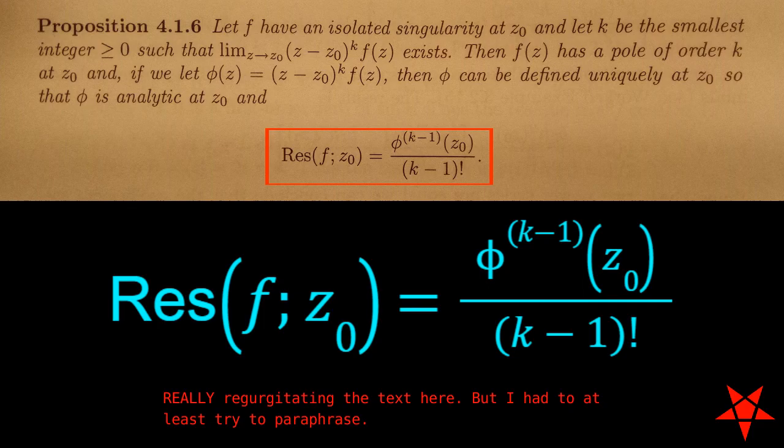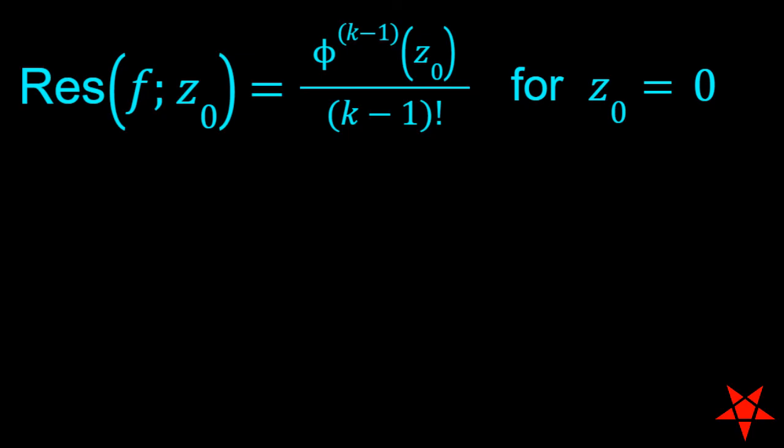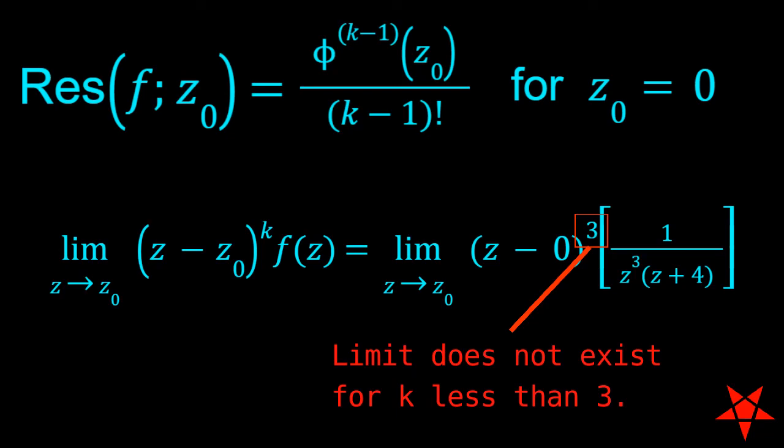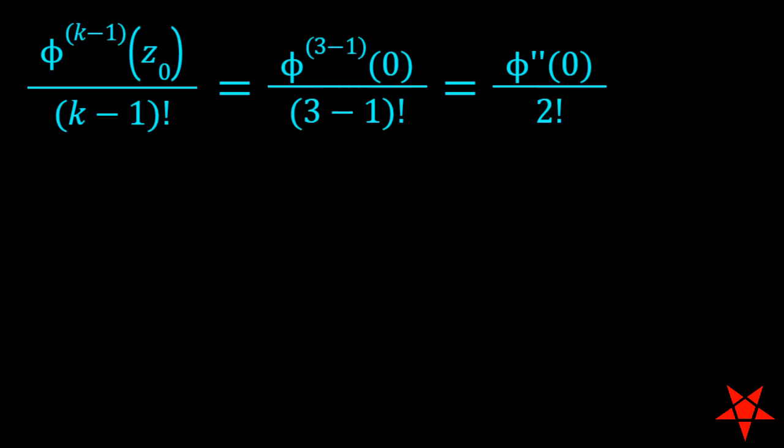So for the case of z naught equals 0, we are looking at a required value of k equals 3 for the aforementioned limit to exist. Inserting for k, z naught, and f of z,